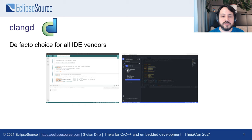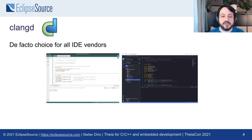See for example the Arduino IDE 2.0 or the Keil Studio Cloud. An important note: clangd requires that you maintain a compile_commands.json file. This is basically a compilation database and must be included in your processes.